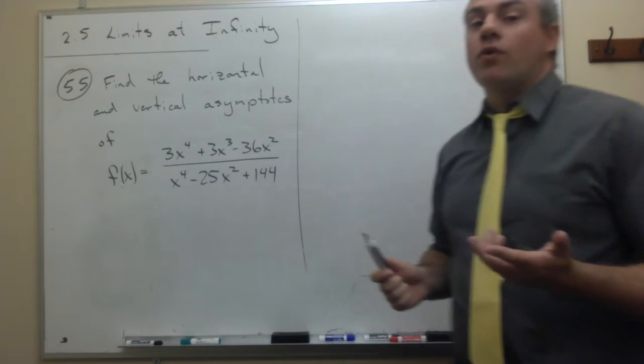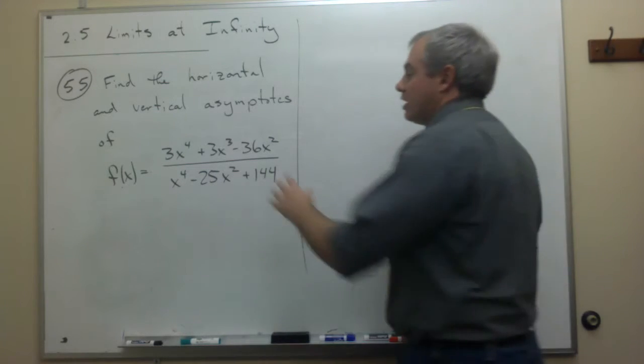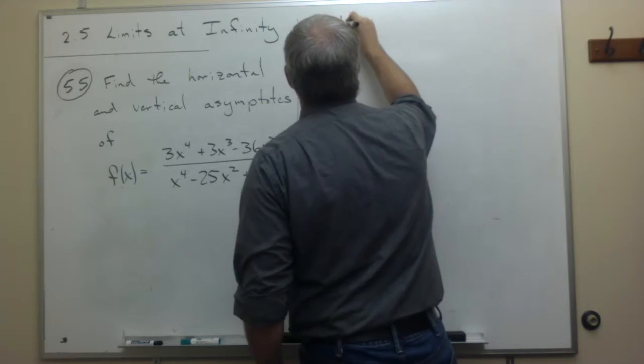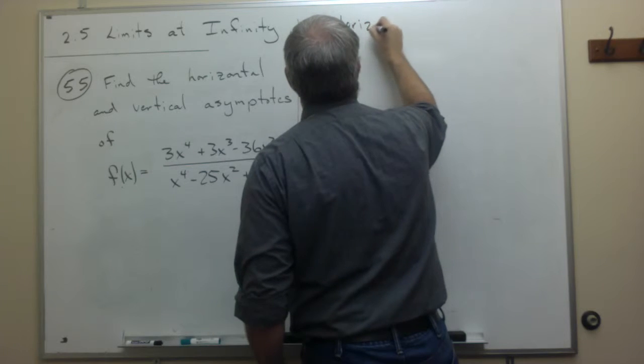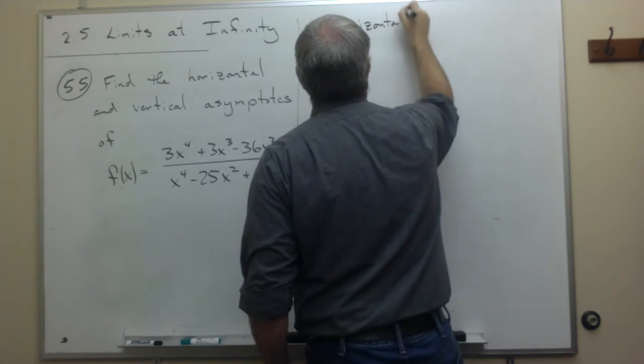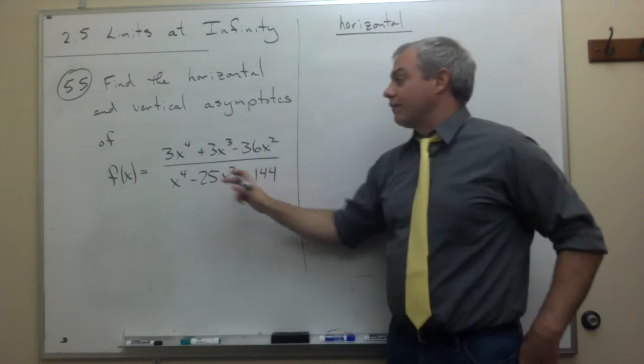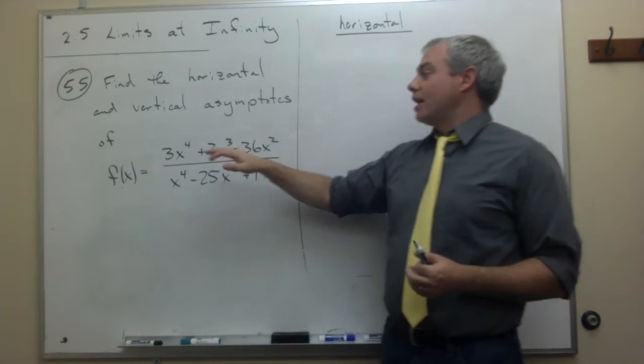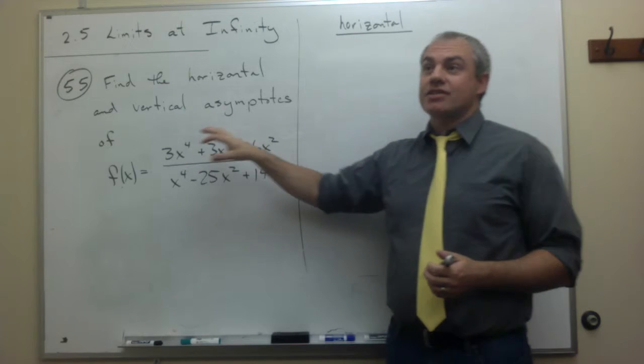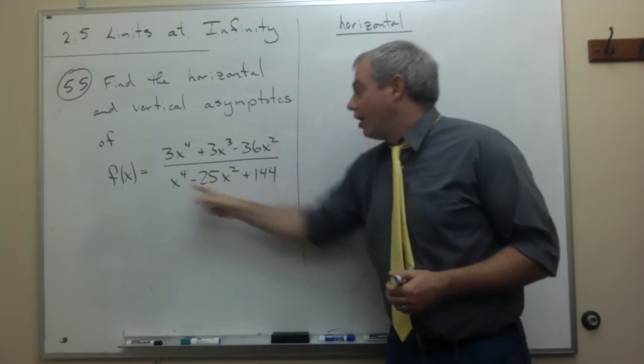Okay, so we're going to find the horizontal and vertical asymptotes of each. Let's start with horizontal. To find the horizontal asymptotes of a function, I need to take the limit as x goes to infinity of the function.